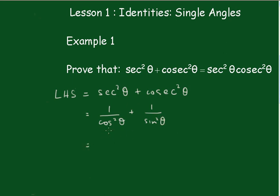Putting this all over a common denominator of sin²θcos²θ, we'll have (sin²θ + cos²θ)/(cos²θsin²θ).